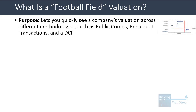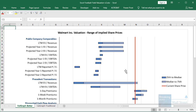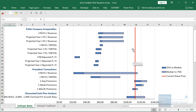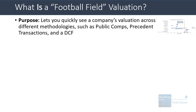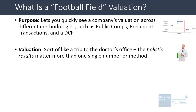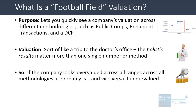So what is a football field valuation? It lets you quickly see a company's valuation across different methodologies such as public comps, precedent transactions, and a DCF, and how the company's current share price compares to all of them. You can see our version right here, and this one would tend to imply that the company seems quite overvalued according to most of these methodologies because it's far above the outputs from the public comps and precedent transactions. Valuation is sort of like a trip to the doctor's office — the holistic results matter a whole lot more than any single number or single method. So if a company looks overvalued everywhere it probably is, and if it looks undervalued everywhere it probably is. Most companies are somewhere in the middle, but this type of football field valuation chart lets you resolve some of the ambiguity.